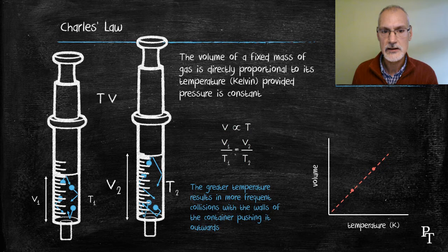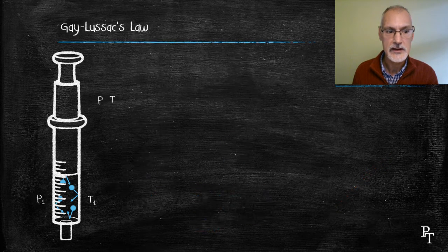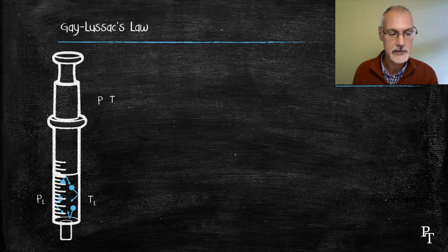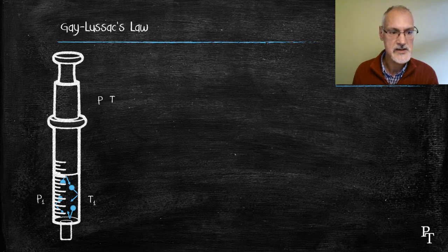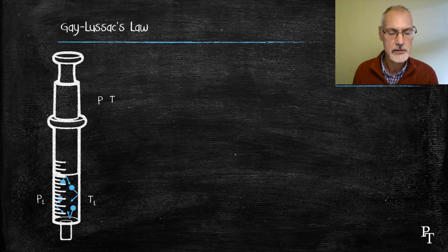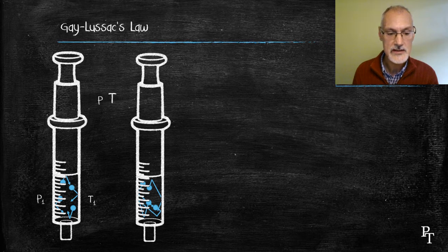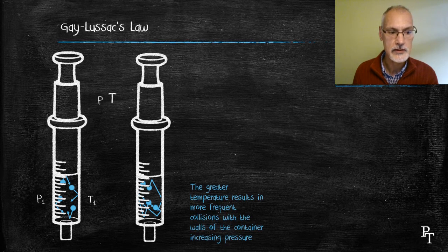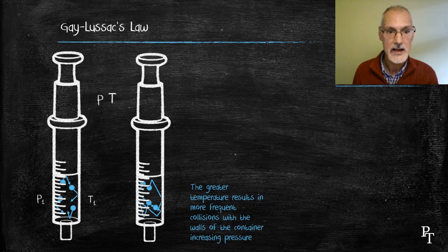Gay-Lussac looked at our last pairing of variables. In this case, how are pressure and temperature related where the volume is kept constant. So in this particular one, I'll increase the temperature of my syringe. That will result then in my particles moving around more forcefully and more quickly, striking the sides of the container far more often, and that will cause my pressure to increase.